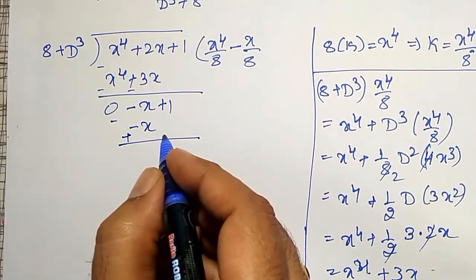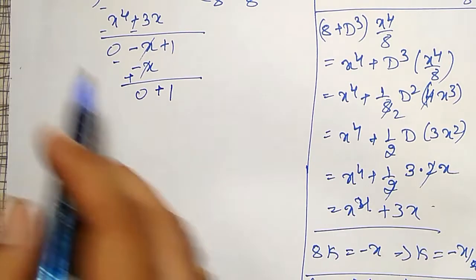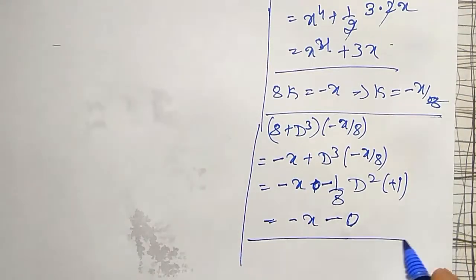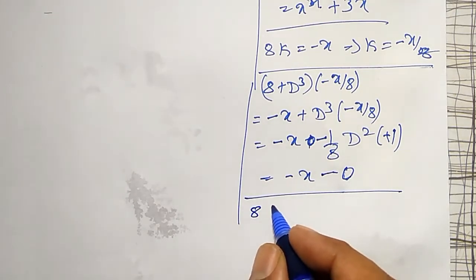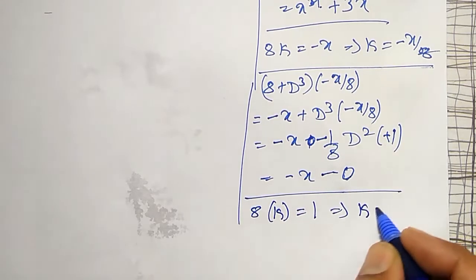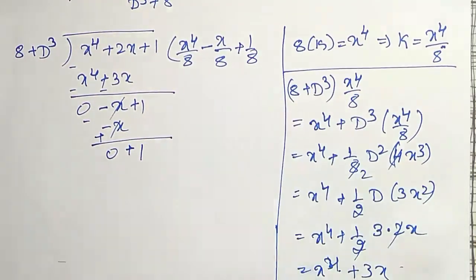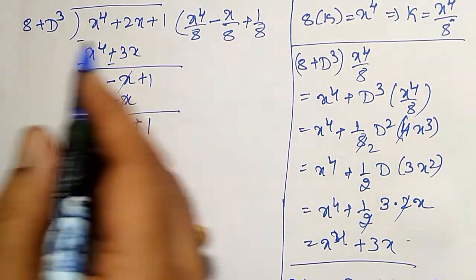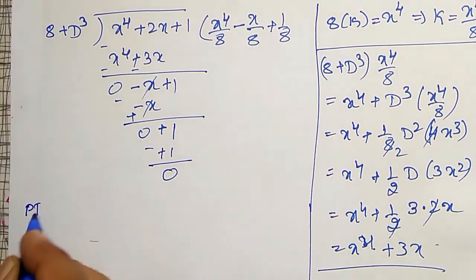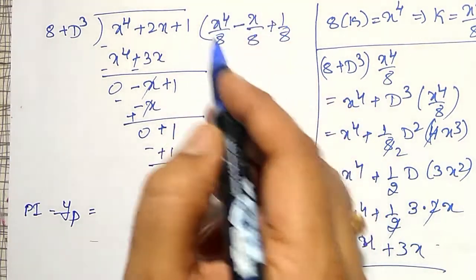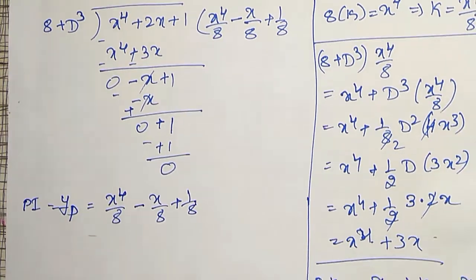Now for the final term: 8 × k = 1, so k = 1/8. This step is shown explicitly to make it easier to follow. Multiplying (8 + d³) by 1/8: the third derivative of 1/8 is 0, so the product is just 1. Subtracting 1 from 1 gives remainder 0. Therefore the particular integral yp is the quotient: x⁴/8 − x/8 + 1/8.